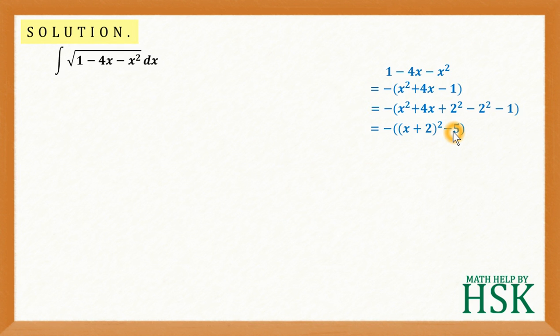So this can be written as x plus 2 whole squared minus 5. This minus sign goes inside, so I am going to get root 5 whole squared. This 5 is written as root 5 whole squared. This minus minus becomes plus, so root 5 squared minus x plus 2 whole squared. This value goes in place of 1 minus 4x minus x squared.